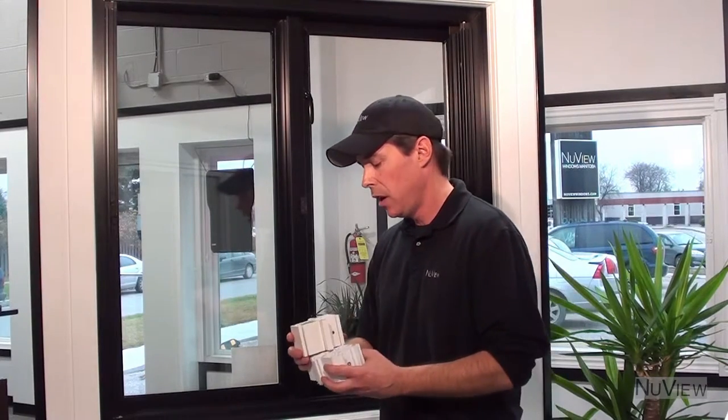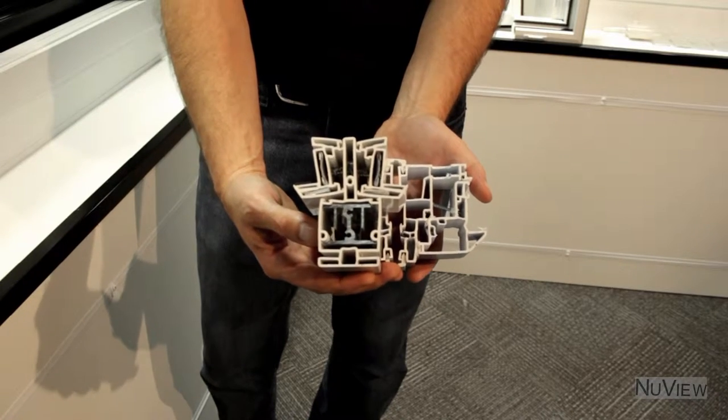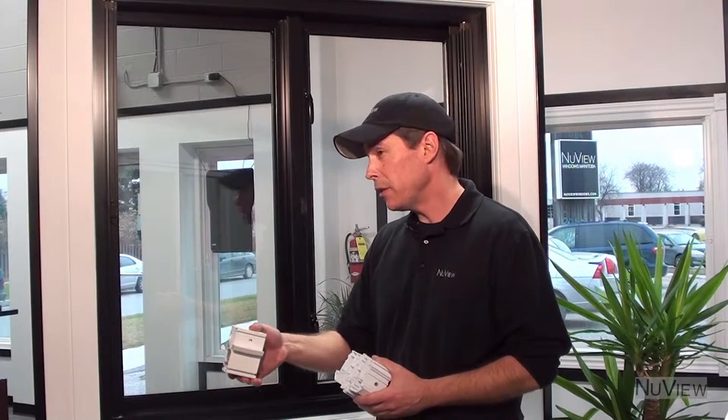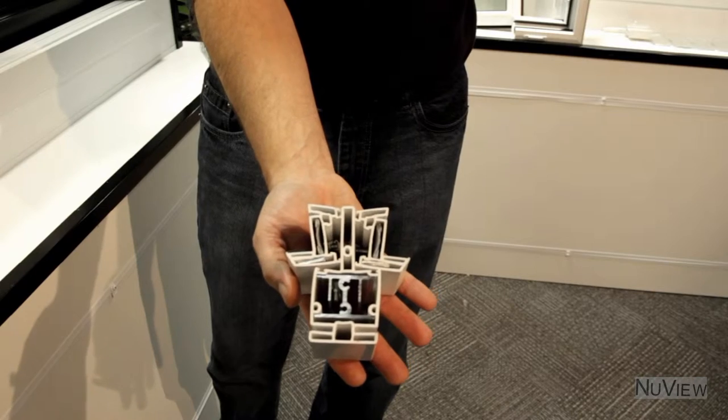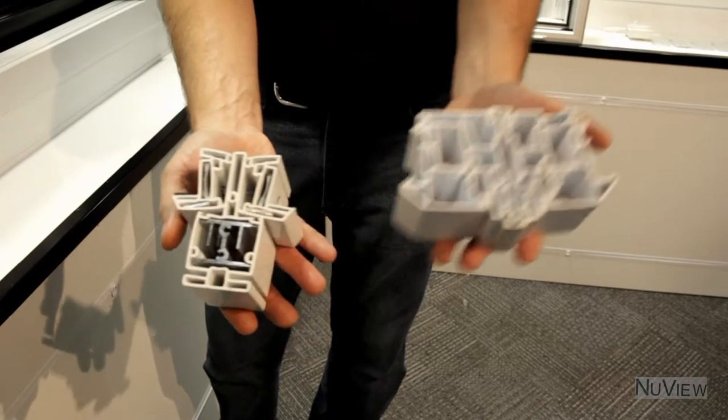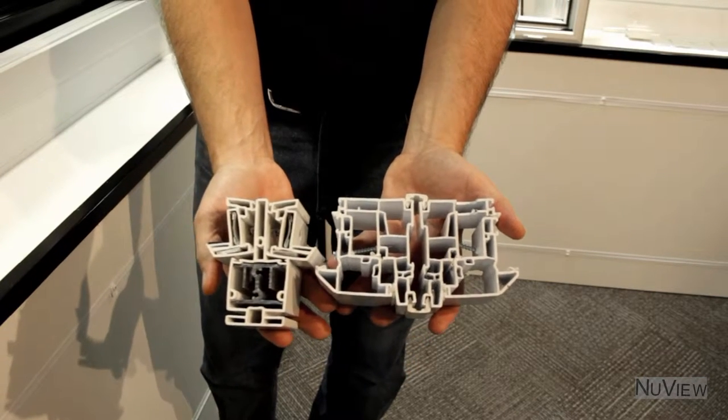We have the only PVC window that is reinforced with steel and aluminum. What that does for you is it gives a frame that's about half the size but five times stronger than any other window frame that you're going to look at.